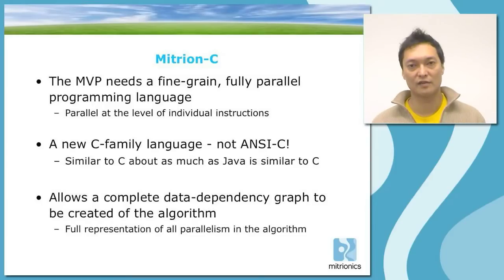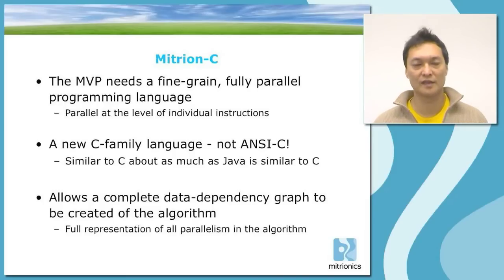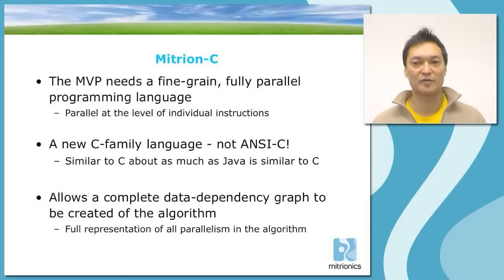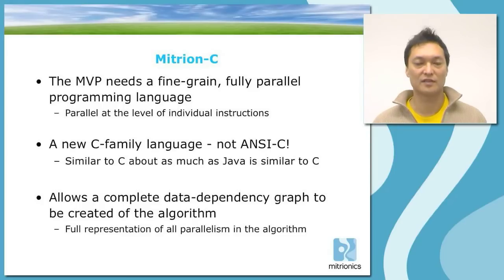However, there are strong semantic differences between Mitron C and C, just like there are strong semantic differences between Java and C. In the case of Java, the differences arise from the fact that Java is an object-oriented programming language, whereas C is a straight procedural language. In the case of Mitron C, the difference comes from Mitron C being a parallel language in contrast to C being a sequential language. The main advantage of Mitron C is that it allows a complete data-dependency graph to be created from the algorithm, giving a full and perfect representation of all parallelism in the algorithm — which is necessary to extract sufficient parallelism to feed the Mitron processor.